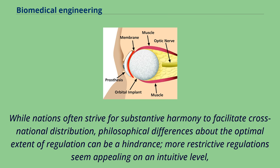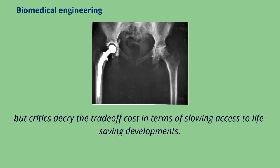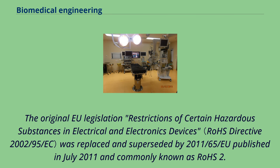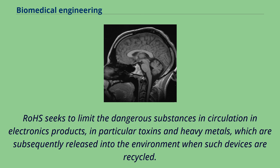While nations often strive for substantive harmony to facilitate cross-national distribution, philosophical differences about the optimal extent of regulation can be a hindrance. More restrictive regulations seem appealing on an intuitive level, but critics decry the trade-off cost in terms of slowing access to life-saving developments. Directive 2011/65/EU, better known as RoHS2, is a recast of legislation originally introduced in 2002. RoHS seeks to limit the dangerous substances in circulation in electronics products, in particular toxins and heavy metals, which are subsequently released into the environment when such devices are recycled.